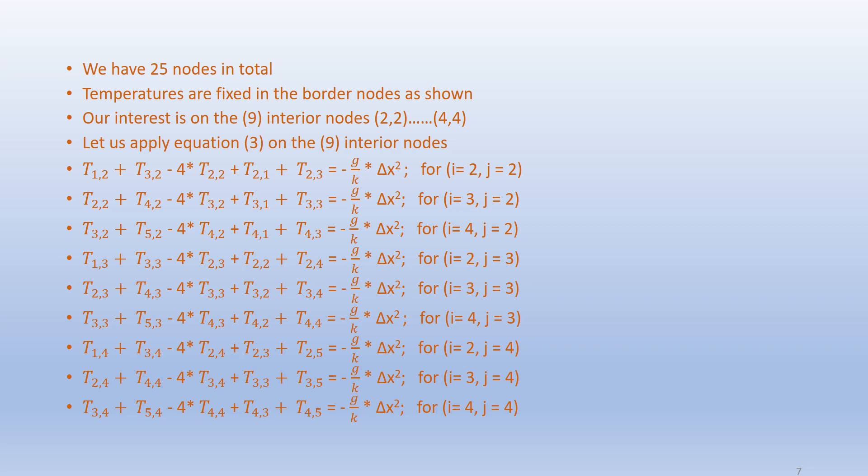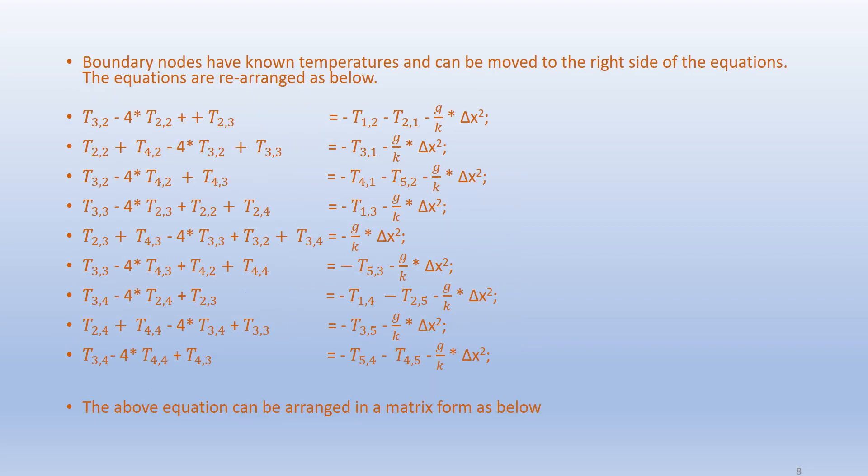For node i=2, j=2, we get: T_{1,2} + T_{3,2} - 4T_{2,2} + T_{2,1} + T_{2,3} = -(G/K)·Δx². We get similar equations for the other 8 interior nodes. Boundary nodes have known temperatures and can be moved to the right hand side of the equations.